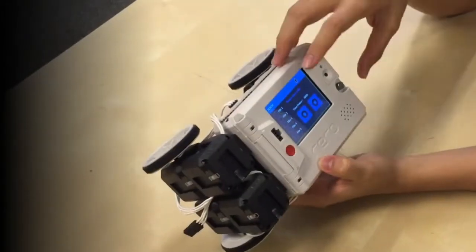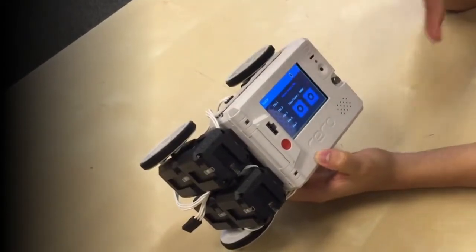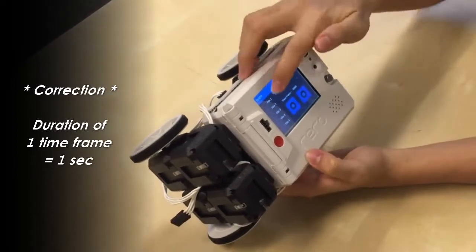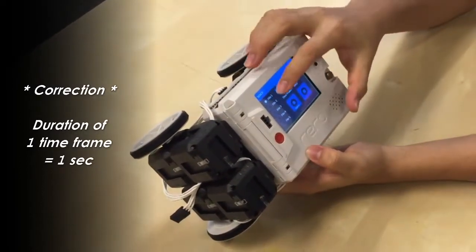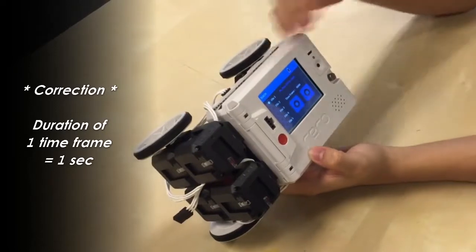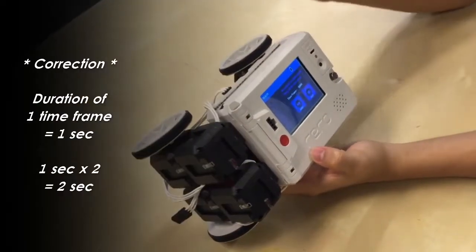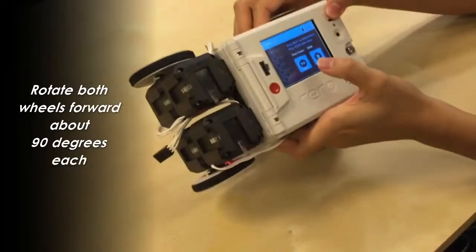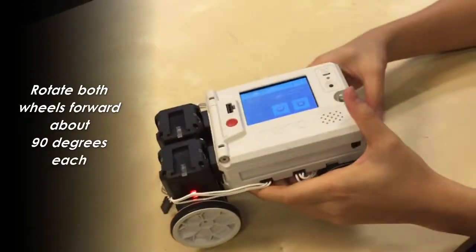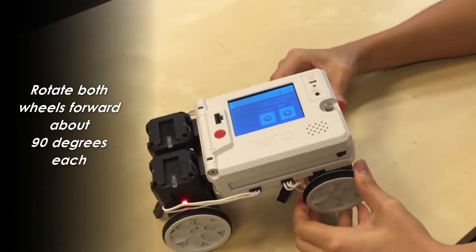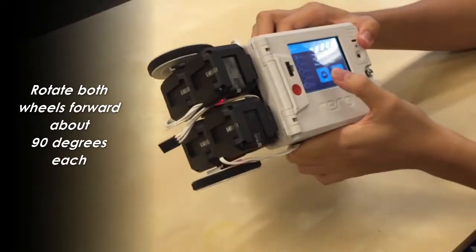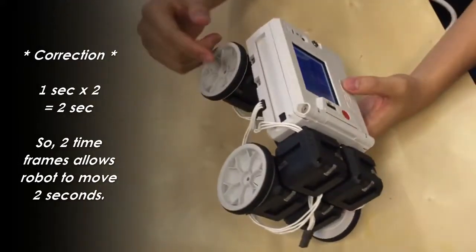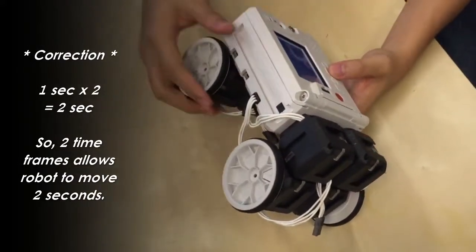Now one thing to remember is that the time frame, the duration of each time frame is 0.5 seconds. So what does this mean is that, I'll show you the example. File one teach. So let's say I want the robot to move forward for one second. So the first step would be moving forward. Step one. And then the second step would be also moving forward. Step two. So two 0.5 seconds equals one second. So by doing this, I made the robot move forward for one second.